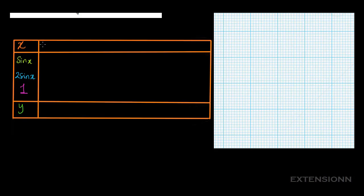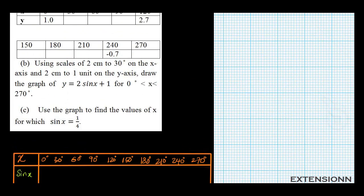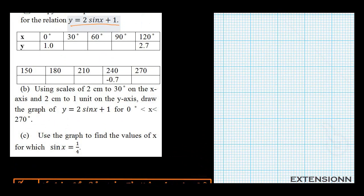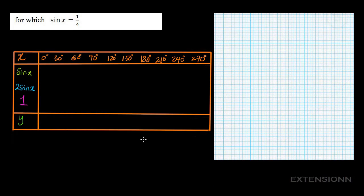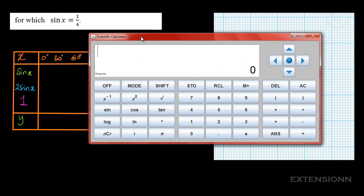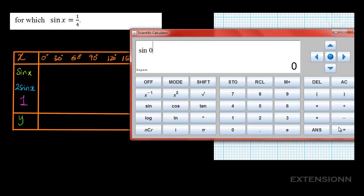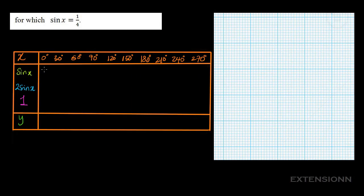For the first values of x we have 0 degrees, 30 degrees, 60 degrees, 90 degrees — all given. We go from 0 down to 270 and find the values of y respectively. At x equals 0, sin 0 equals 0. You know that automatically, so just write 0.